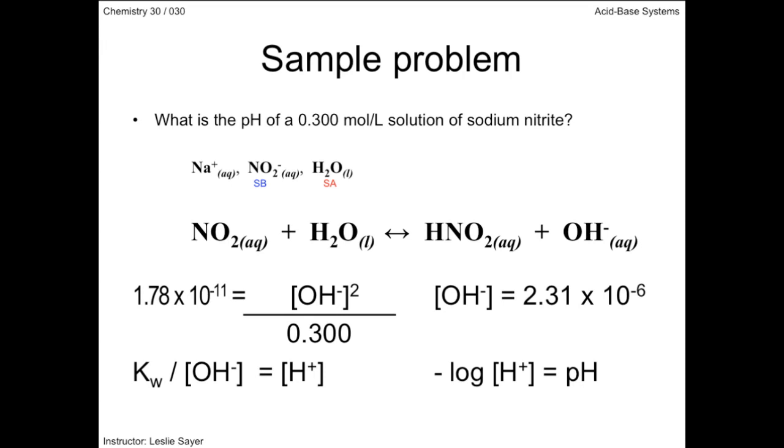And finally, use the negative log of the hydrogen ion concentration to determine the pH, which is 8.364 rounded to three significant digits. Remember the significant digits rule for expressing pH and pOH. Only the digits following the decimal are significant.